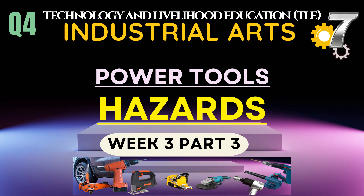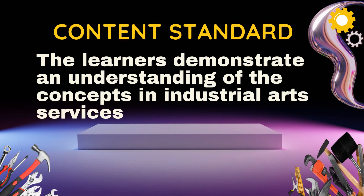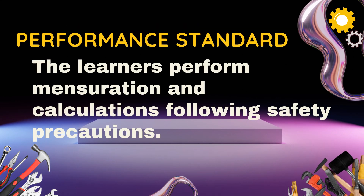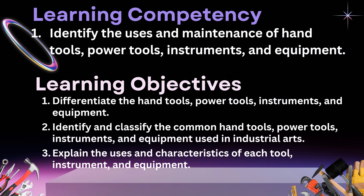Technology and Livelihood Education Industrial Arts for Grade 7, Quarter 4, Week 3, Part 3. Our topic is Power Tool Hazards. The content standard is: the learners demonstrate an understanding of the concepts in industrial arts services. The performance standard is: the learners perform mensuration and calculations following safety precautions. Here are the learning competency and learning objectives for this lesson.